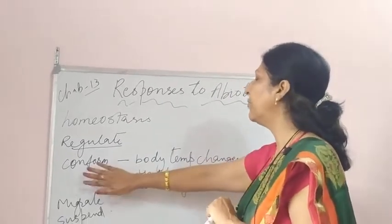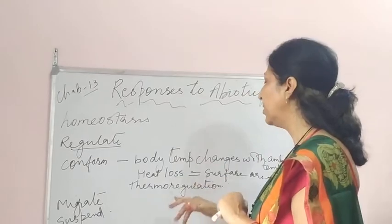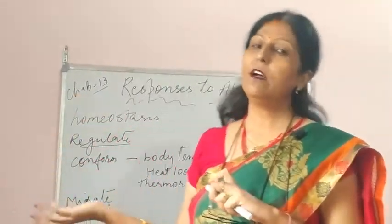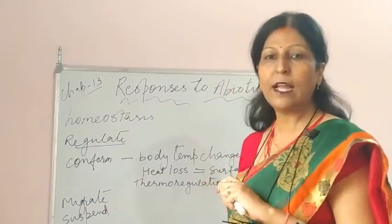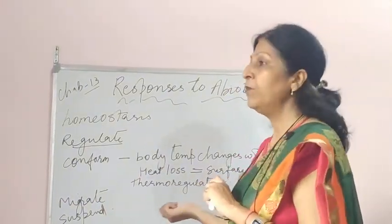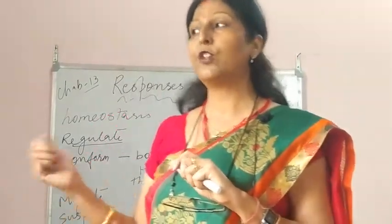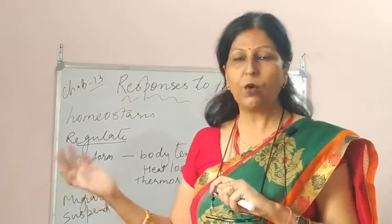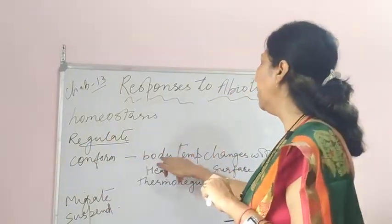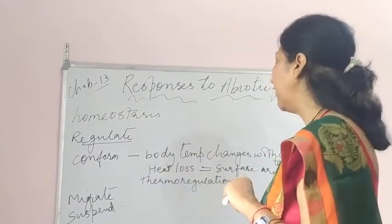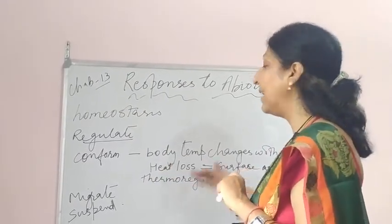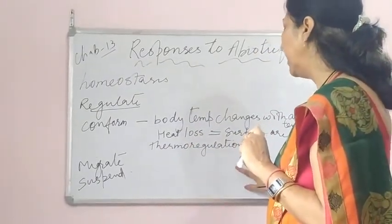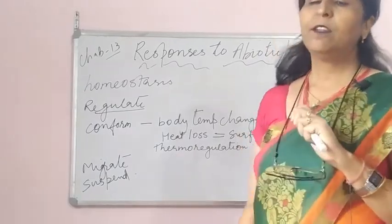Next we come to Conformers. Conformers are organisms whose body temperature fluctuates with the outside temperature. They are generally smaller organisms — for example, fishes. For fishes, osmoregulation in seas and oceans is a challenge. It is very difficult for conformers to manage their internal temperature, so thermoregulation is a problem for them.